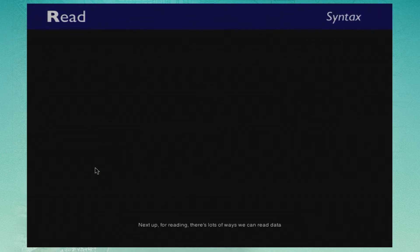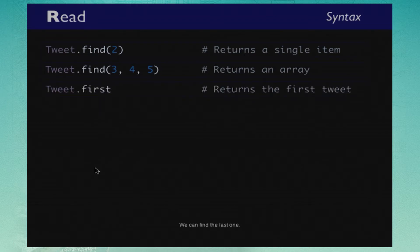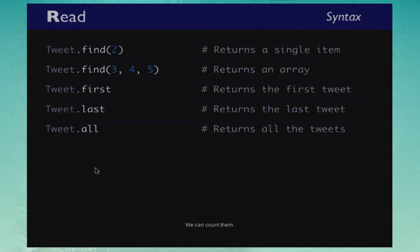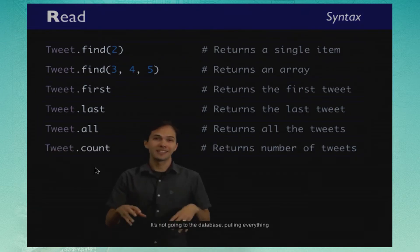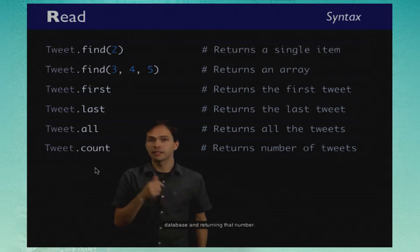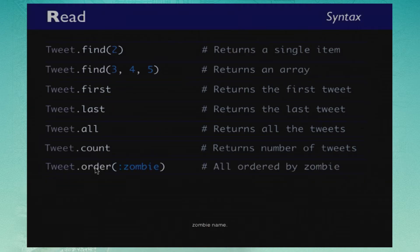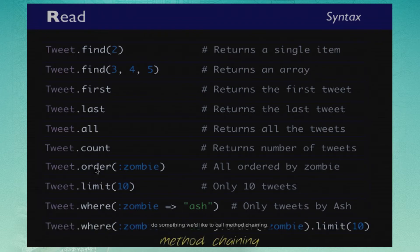For reading, there are lots of ways to read data out of the database. We can find a particular item with an ID number, find a bunch of items returning an array, find the first one, find the last one, find all of them, or count them. The count method does this correctly — it runs a count query on the database rather than pulling everything out and counting it. We can also order by zombie name, limit to 10, filter where zombie name equals 'ash,' or chain all these methods together.